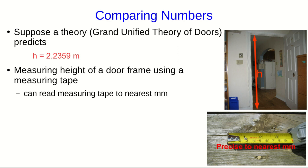So I'm going to measure the height of my door frame using a measuring tape, which can be read to the nearest millimeter. And I would say I can make this measurement to no better than that precision. So I measure once and get 2.234 meters. Does that agree with the prediction?